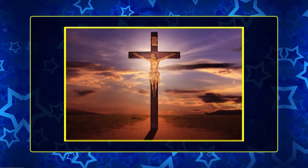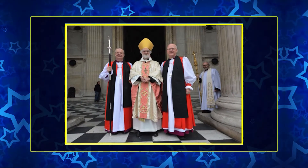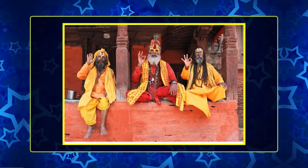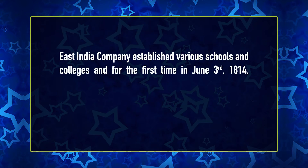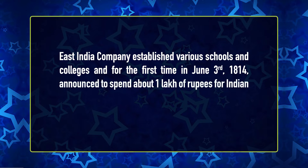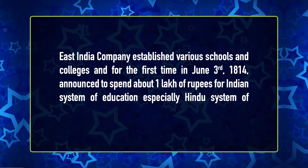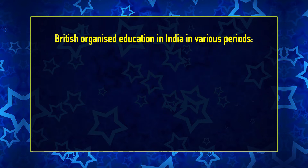During the intervening period, they began to spread Christianity in the land. They started educational institutions in all the towns of India. The East India Company made education a means of publicity and religion. A Bishop came to India and used to call himself the Western Brahman, following most of the manners of a Hindu Sanyasi. The East India Company established various schools and colleges, and for the first time in India, on June 3, 1814, announced it would spend about one lakh rupees for the Indian system of education, especially the Hindu system.